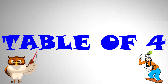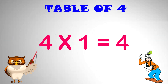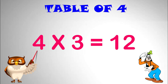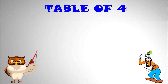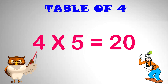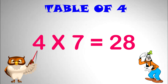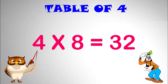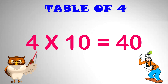Table of 4. 4 multiplied by 1 equal to 4. 4 multiplied by 2 equal to 8. 4 multiplied by 3 equal to 12. 4 multiplied by 4 equal to 16. 4 multiplied by 5 equal to 20. 4 multiplied by 6 equal to 24. 4 multiplied by 7 equal to 28. 4 multiplied by 8 equal to 32. 4 multiplied by 9 equal to 36. 4 x 10 equal to 40.